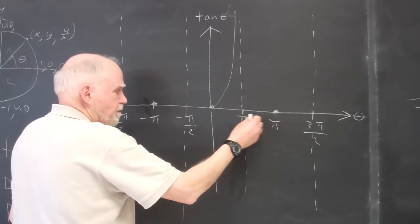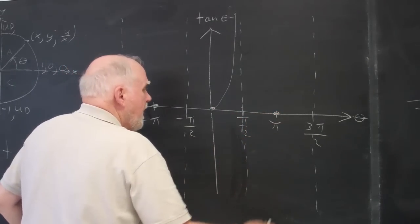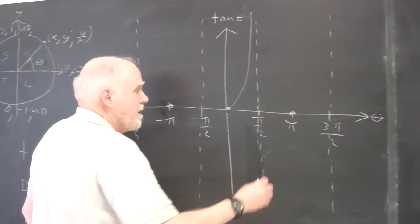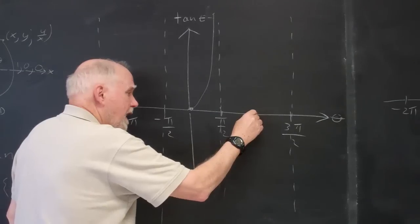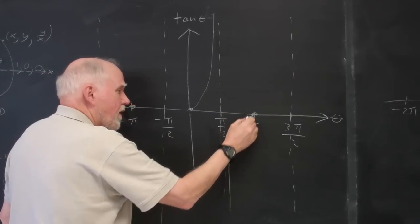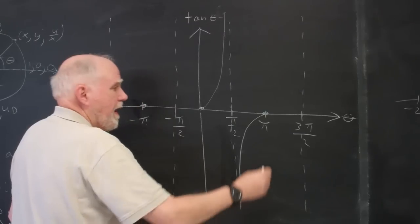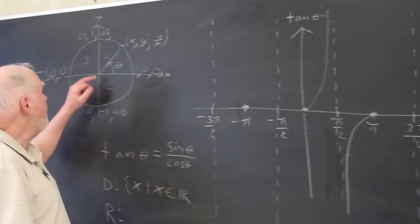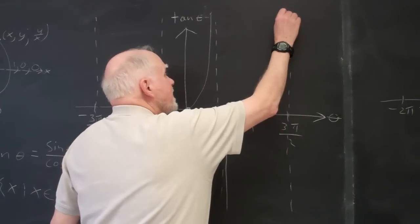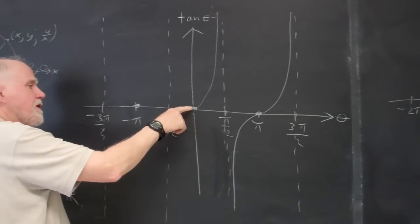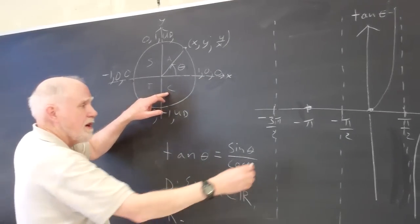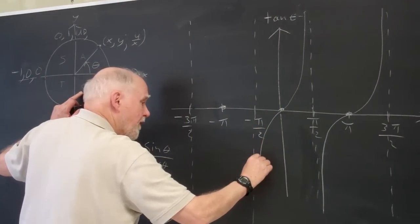Between pi over two and pi, only the sine is positive, so the tangent has to be negative — all the tangent values are below the theta axis. Between pi and three pi over two, the tangent is positive, so it goes up again. Going backwards from zero to negative pi over two, we're in negative territory because only the cosine is positive, so it goes to negative infinity.